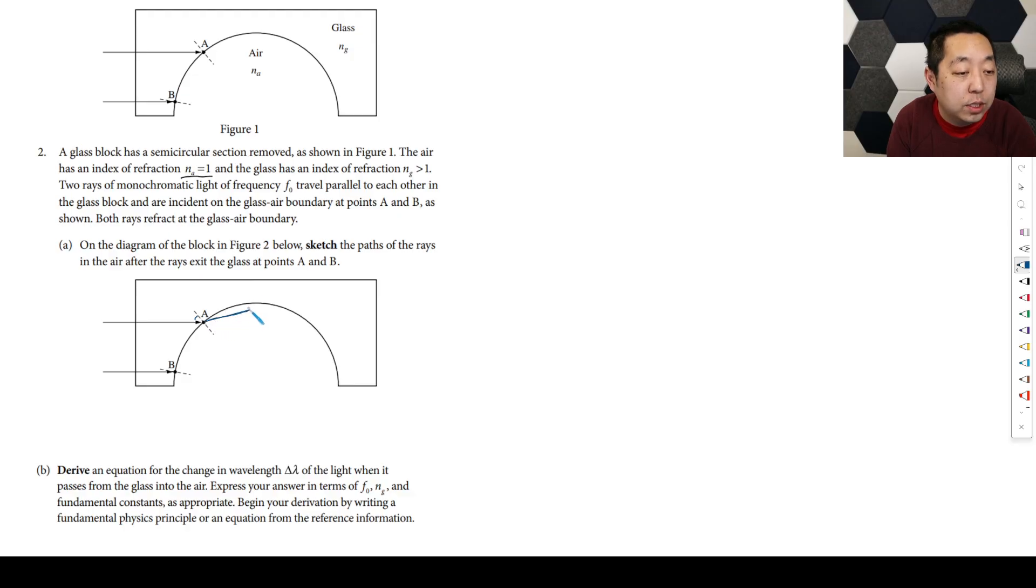So here they've drawn the normal vector for you, so you're going to make this angle bigger like this. It's going to bend upwards in this case because it has to be a bigger angle after it exits the ray. So I think you just want to sketch the path of the ray in the air after the ray. You're just going to draw this part right here.